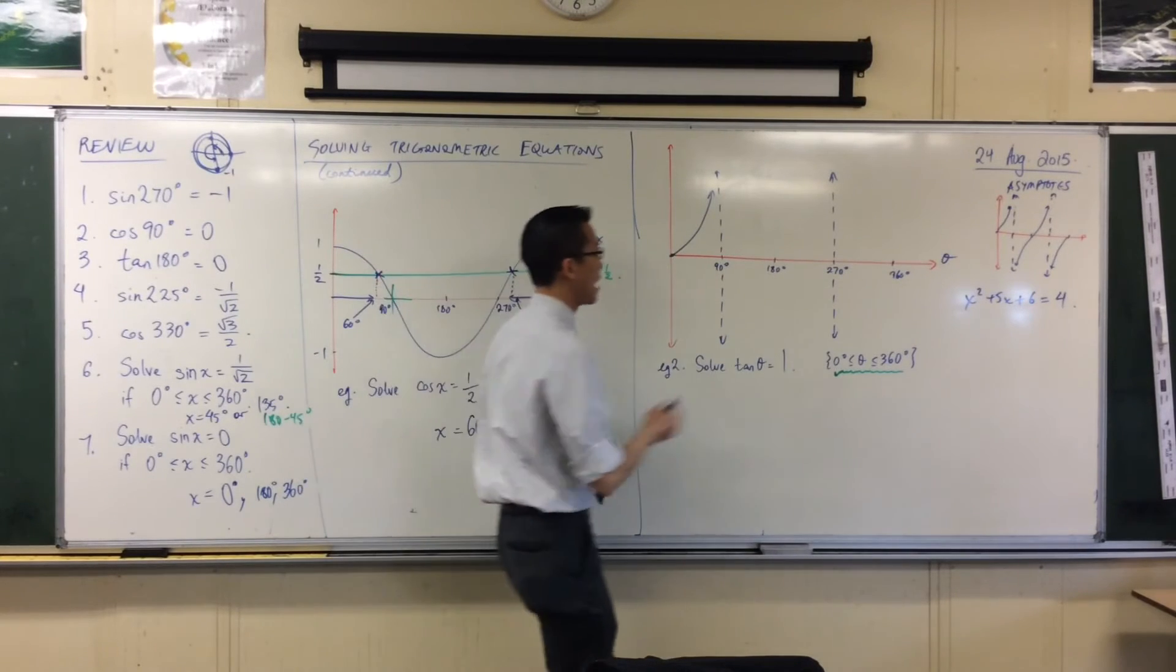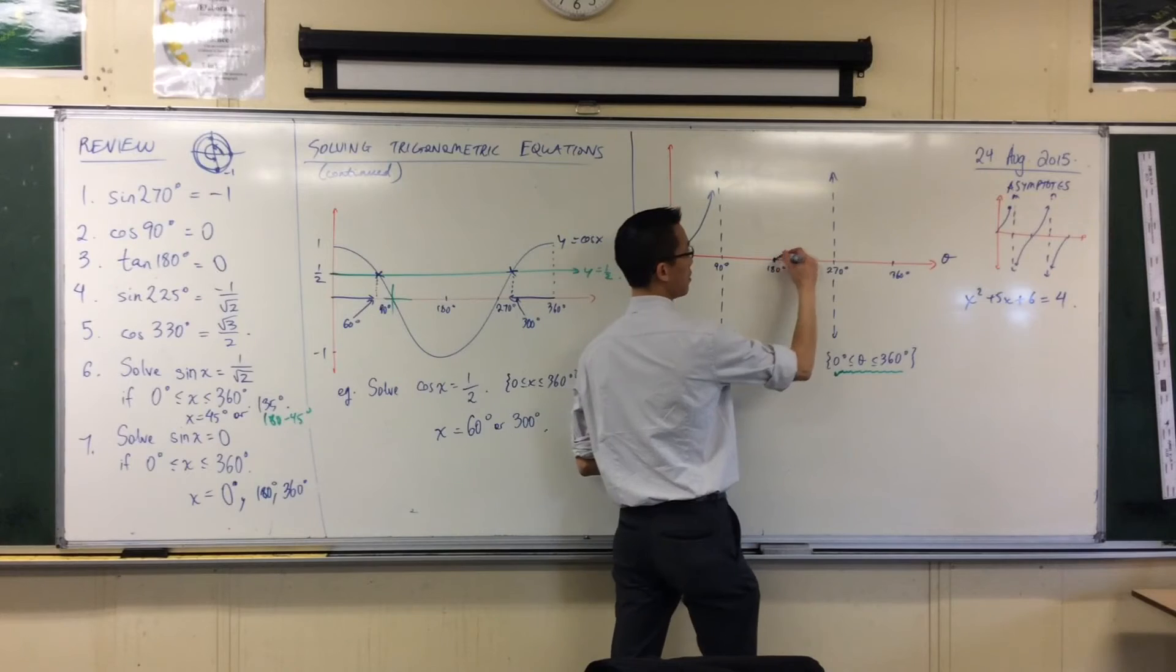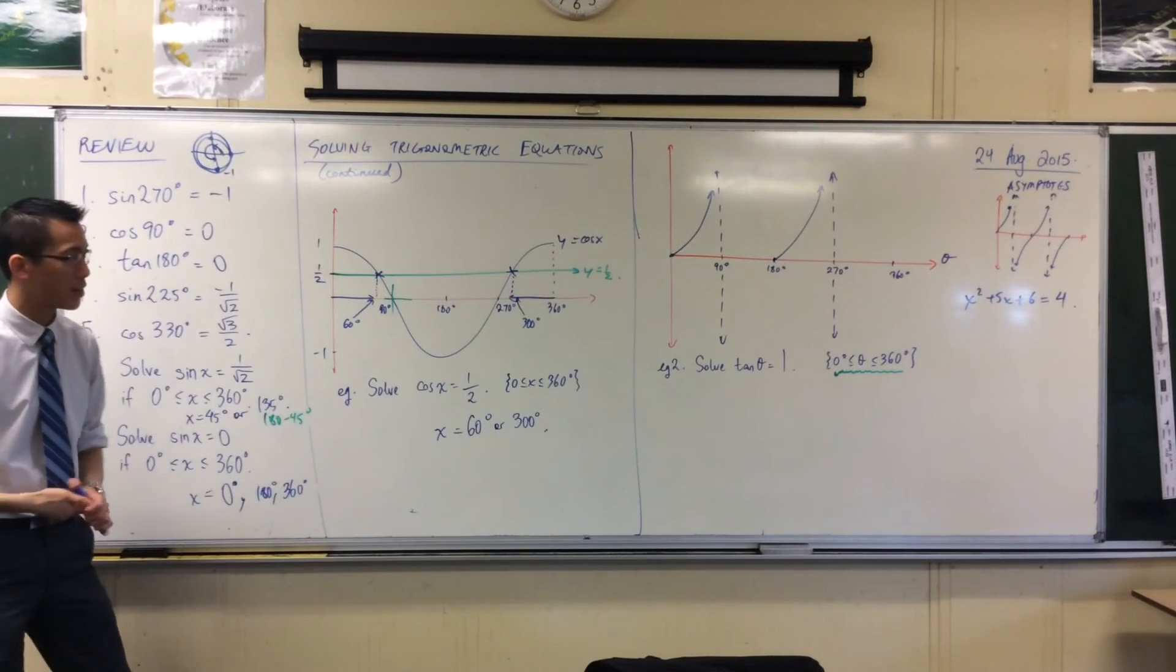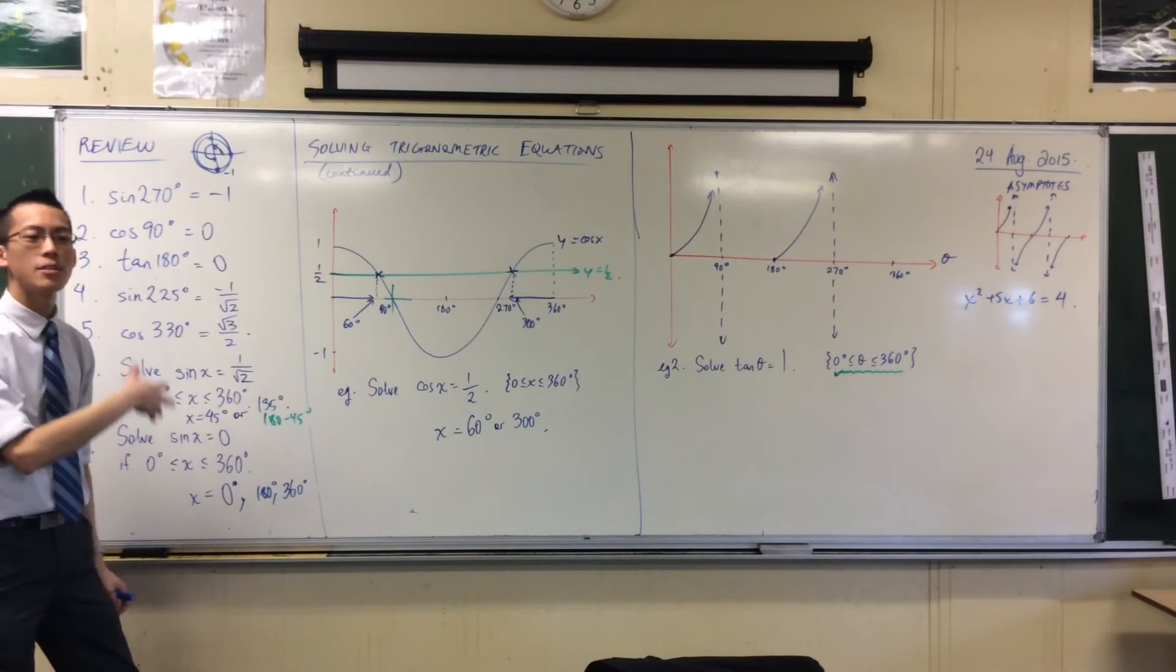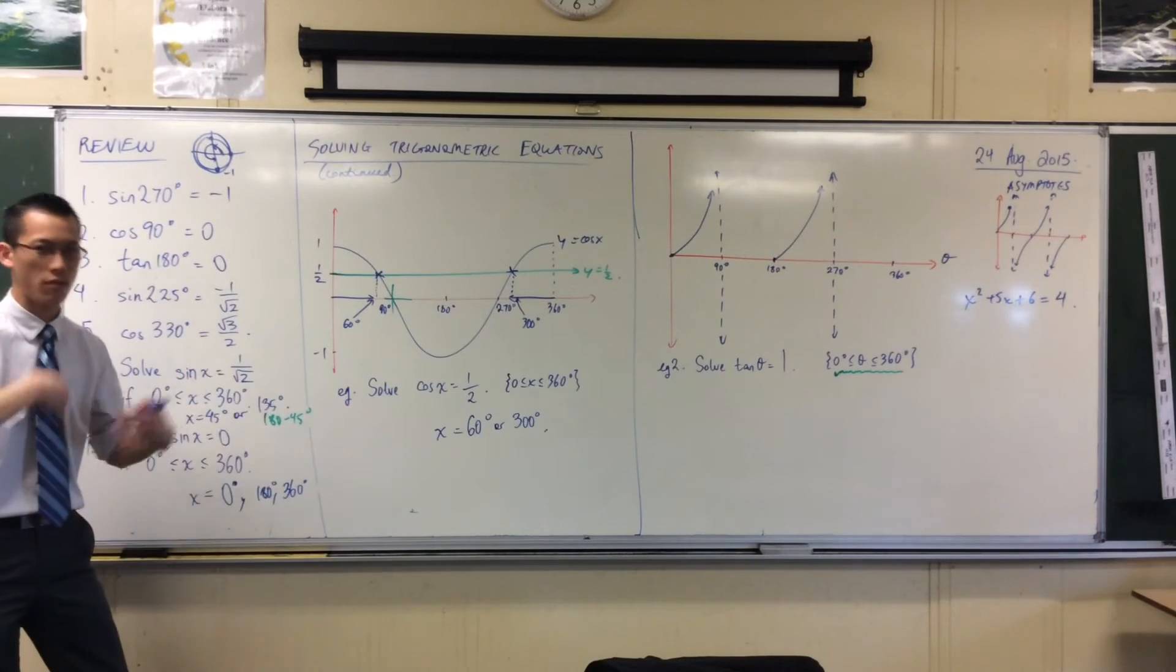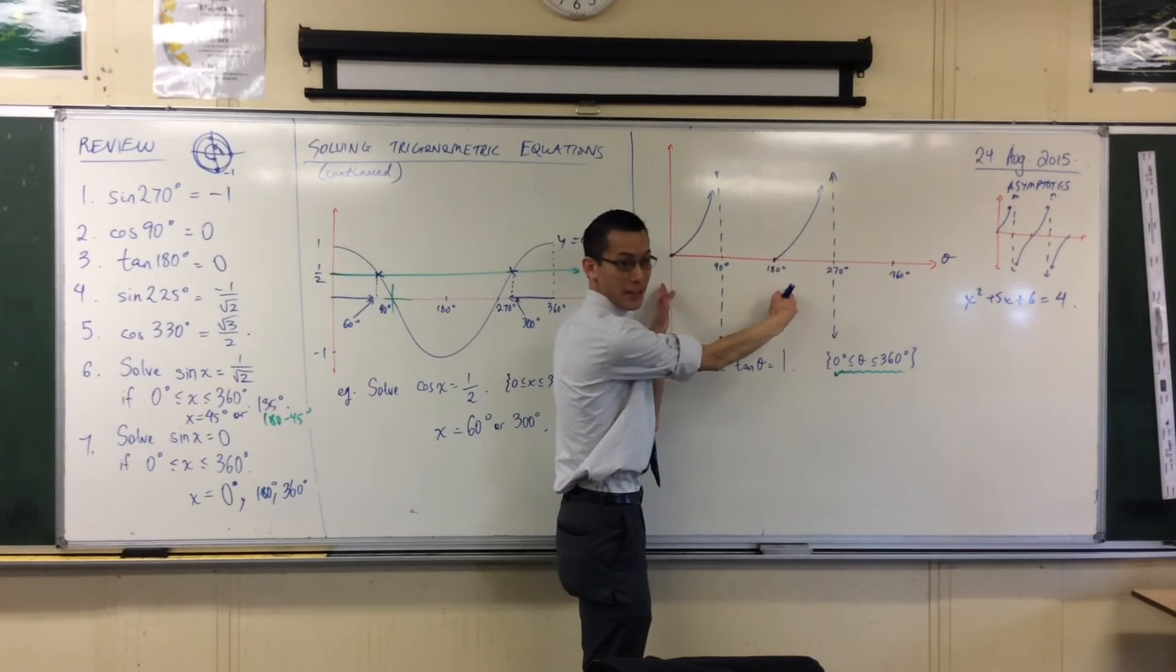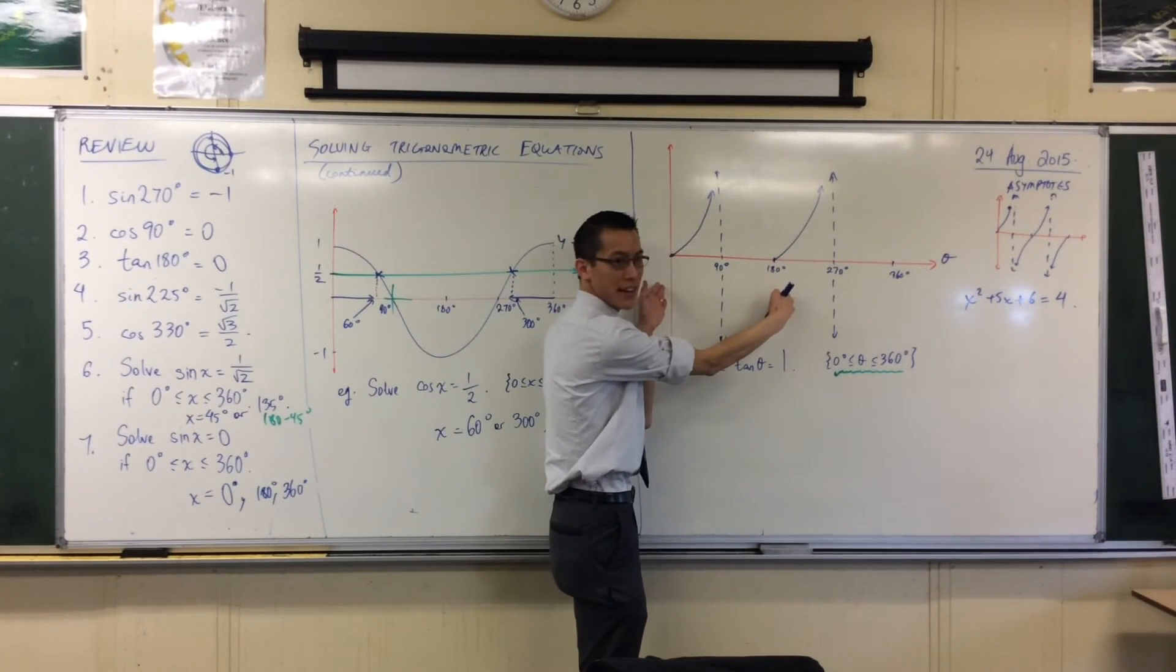That same shape, I'm going to copy over to here. And the reason I just copy it is because just like sine and cosine, tan is periodic. It just repeats over and over again, and it repeats every 180 degrees. That's why I went over 180 degrees and then I have this shape.